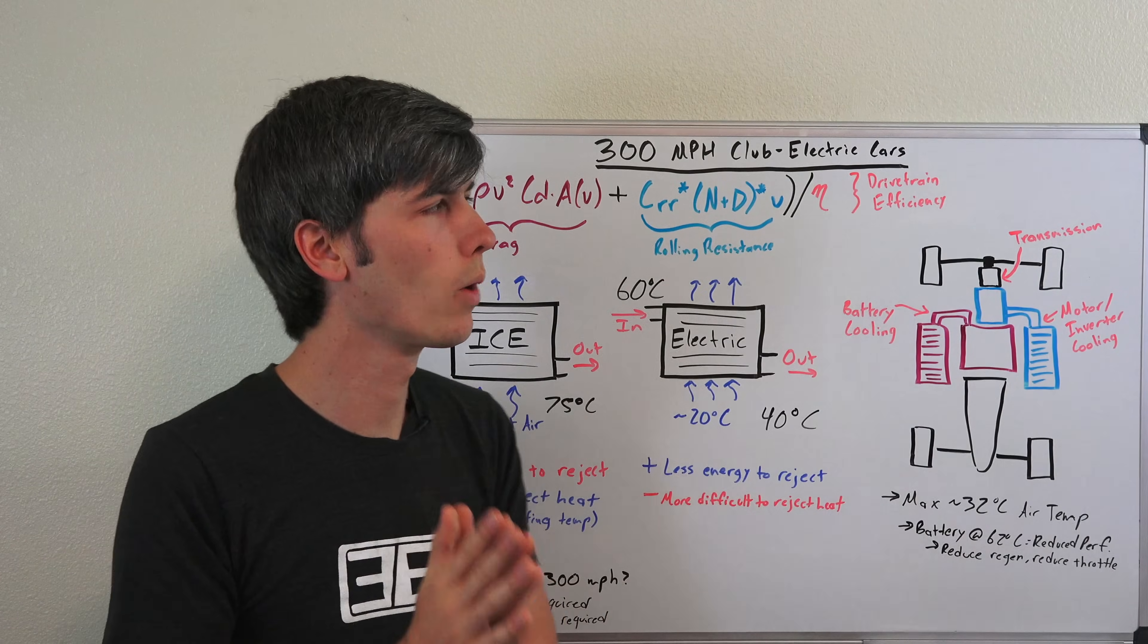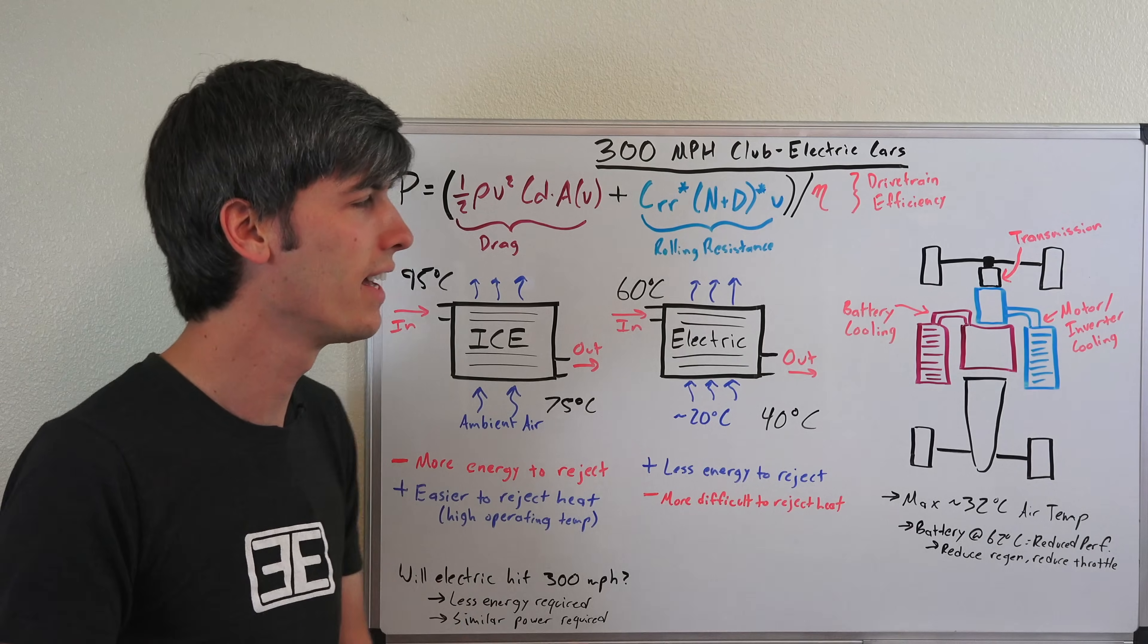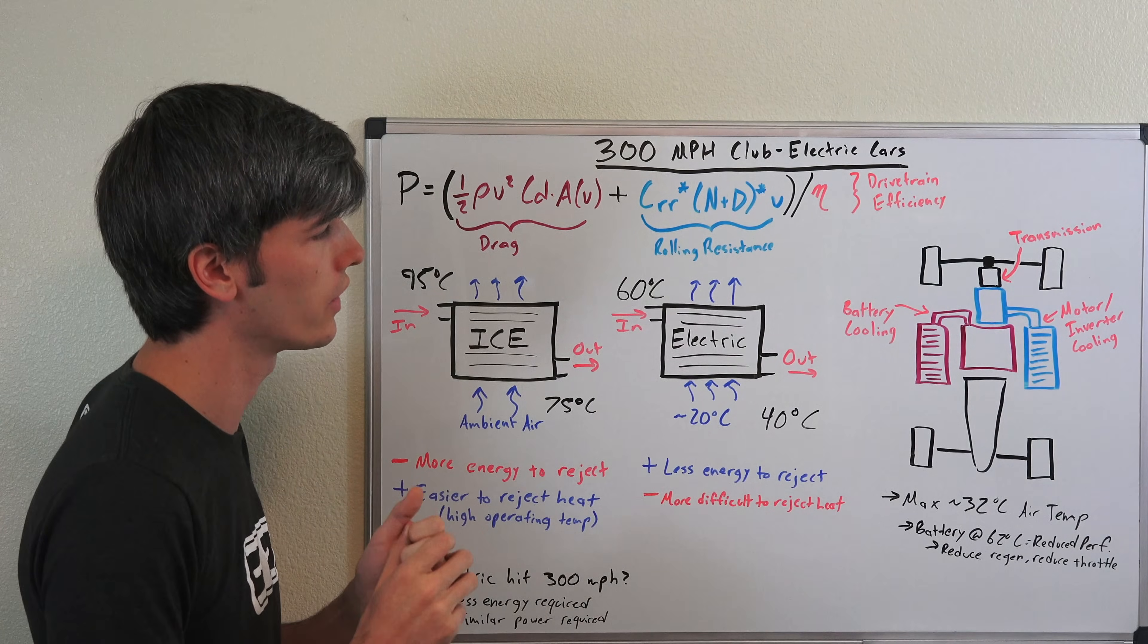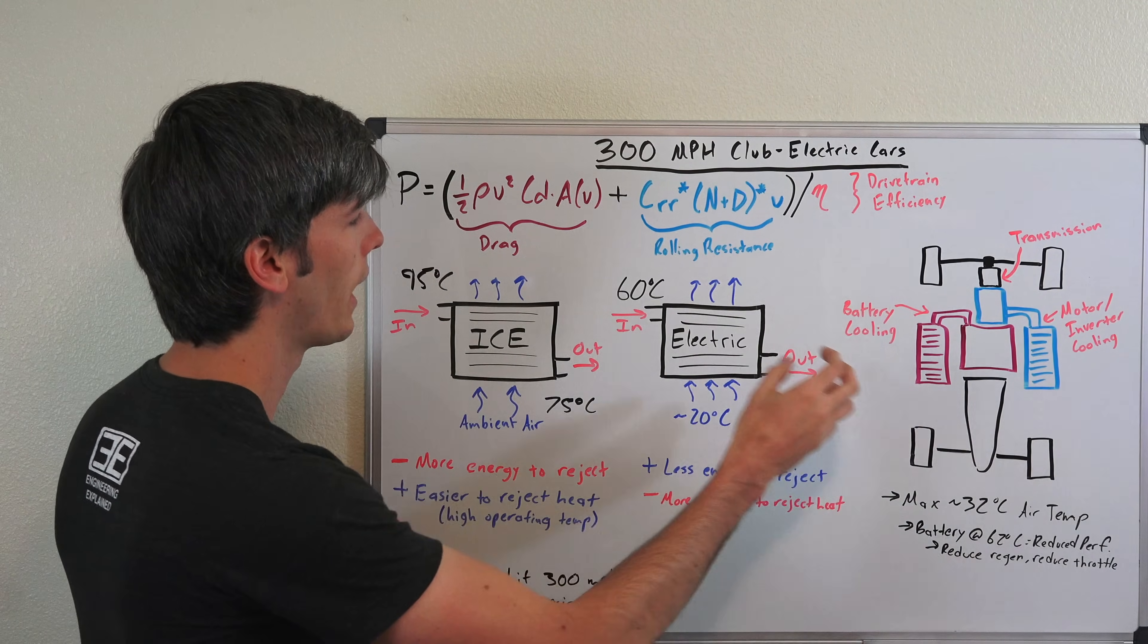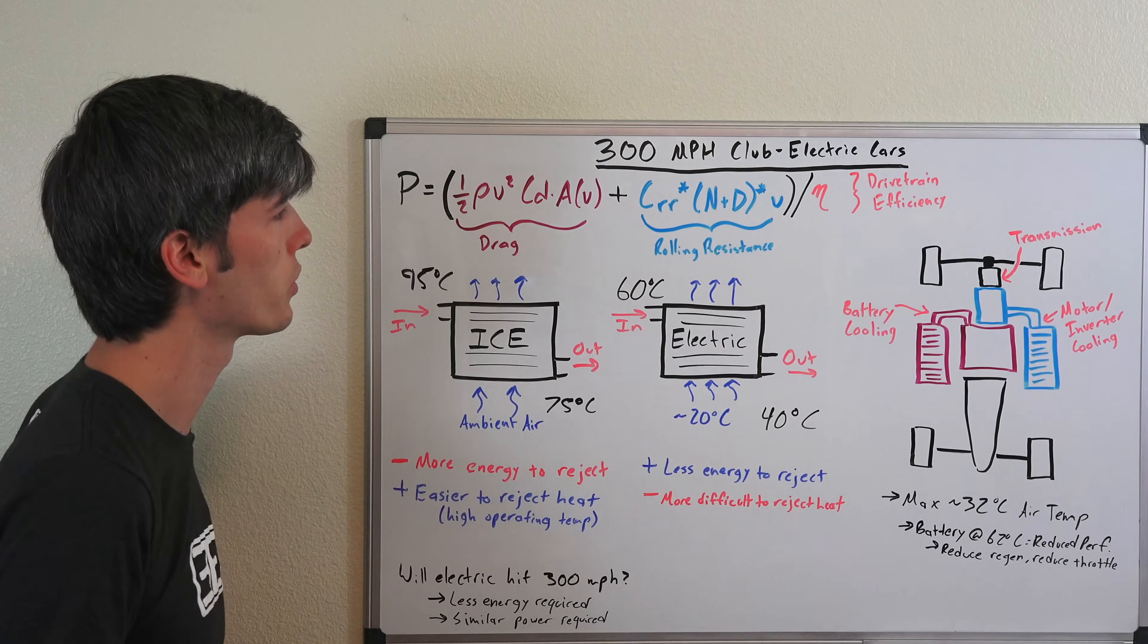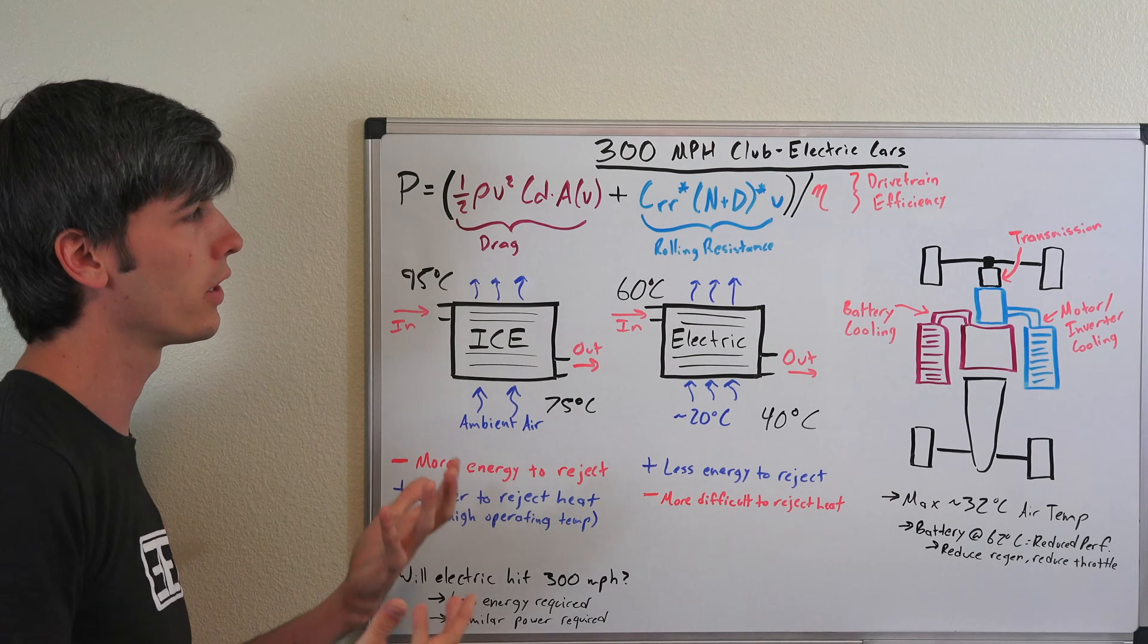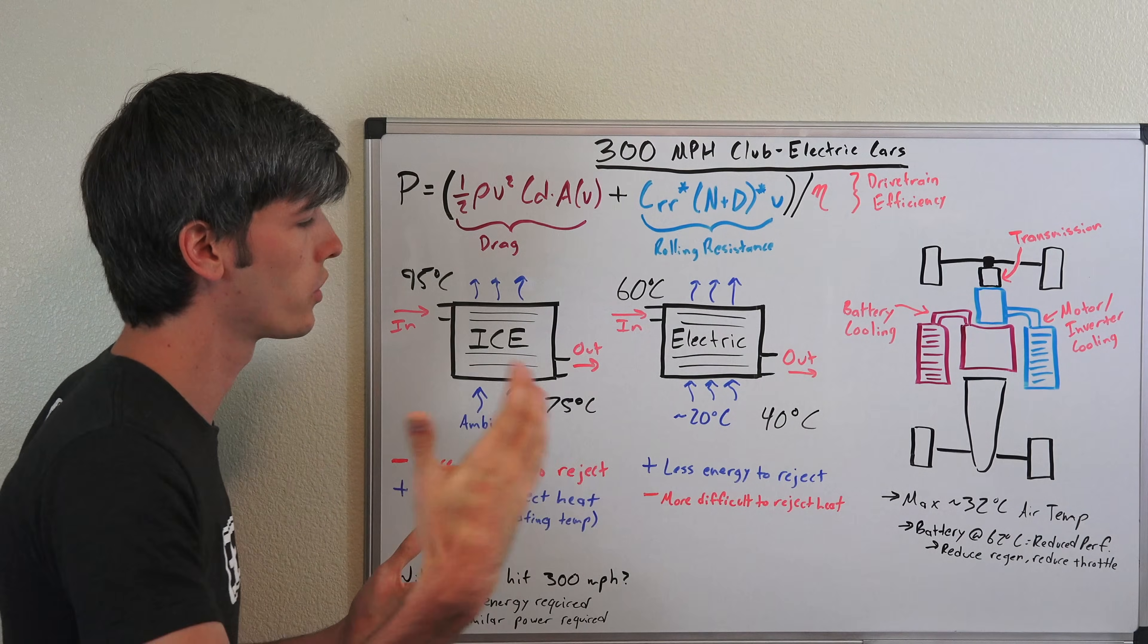So going back to our original question, will an electric production car be the first to hit 300 miles per hour? It's really not any less of a challenge than it is for internal combustion engines, and reason being is because you're still going to need significant cooling, as a result of those lower coolant temperatures, which will influence your coefficient of drag. And that means ultimately you're going to need similar power levels as an internal combustion engine to reach those high speeds.